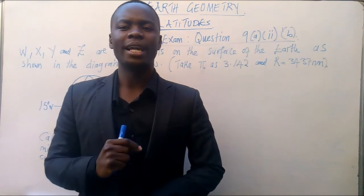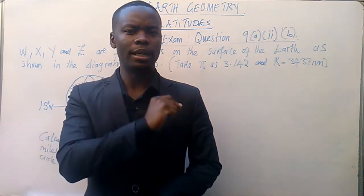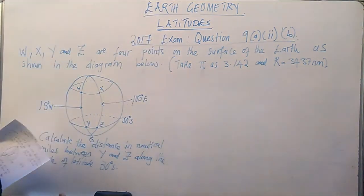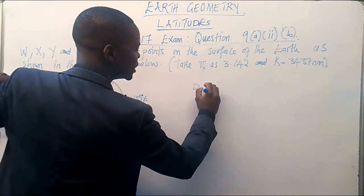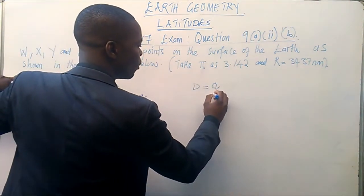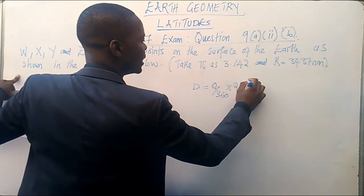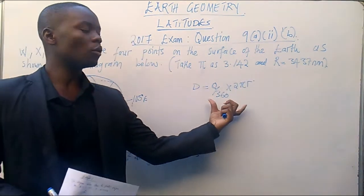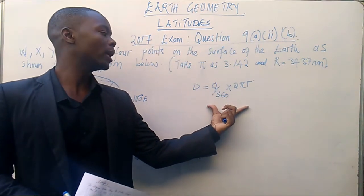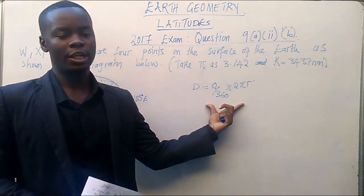So I'm going to start by interrogating the distance formula. So the distance formula, we have got D is equal to theta over 360 times 2πr. This is the originality of the formula of a distance under latitude.